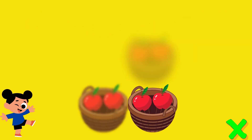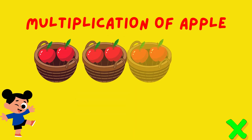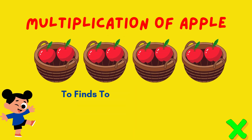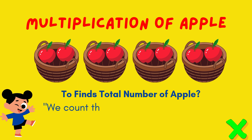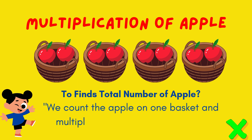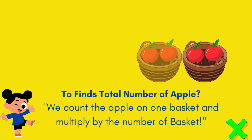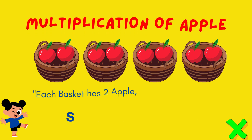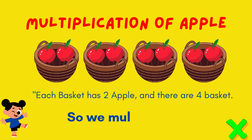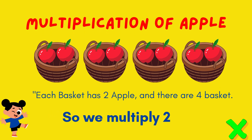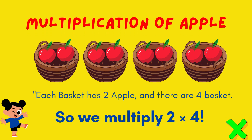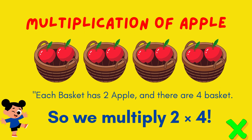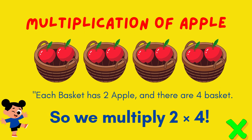Multiplication of apples finds the total number of apples. We count the apples in one basket and multiply by the number of baskets. Each basket has two apples and there are four baskets, so we multiply two times four.